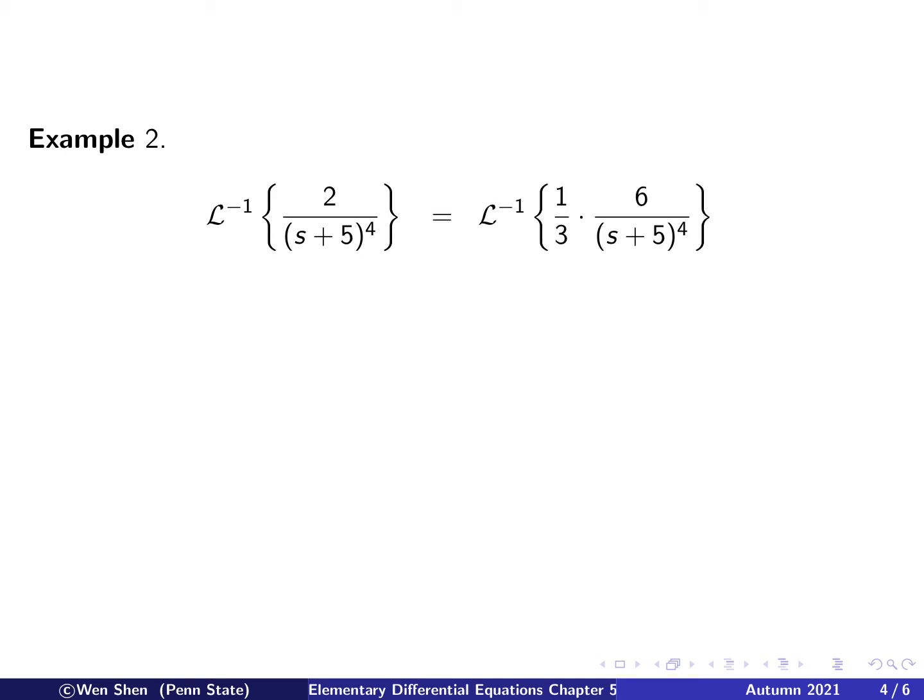So we see that in order to fit in a polynomial which has something like s to the power 4 here, then on the top we will need 3 factorial, which is 6. So if I put 6 here, then I need to multiply by a factor of 1/3 so that I'll get 2. So I can manipulate in this way. So that is the first step.